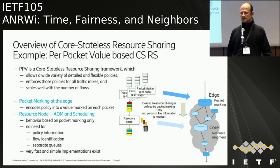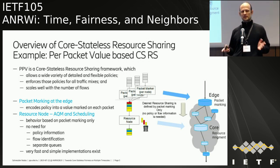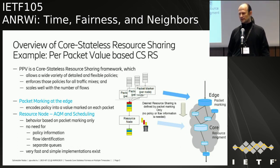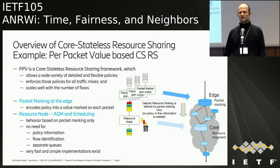The pair-packet-value-based core stateless framework allows a wide variety of detailed and flexible policies, enforces them for all traffic mixes, and scales well with the number of flows. There are two components: packet marking at the edge, and resource nodes in the core doing AQM and scheduling. The resource node doesn't know about policies or flows — it only acts based on packet marking, enabling very fast and simple implementations.